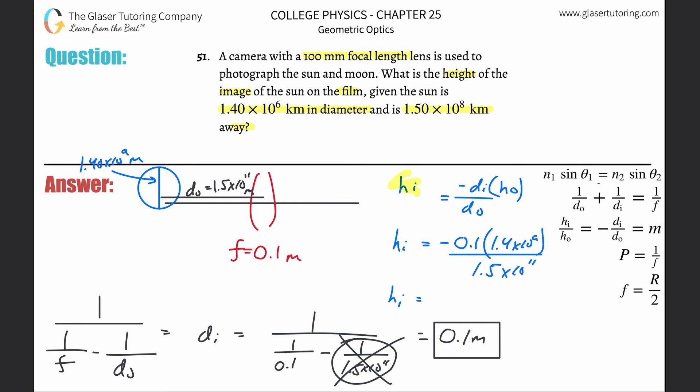This is then going to be negative 0.1 multiplied by 1.4 times 10 to the 9th, divided by 1.5 times 10 to the 11th. So the image height now is negative 9.33 times 10 to the negative 4th. Isn't that kind of crazy if you think about it? I mean the sun is 1.4 billion meters high.